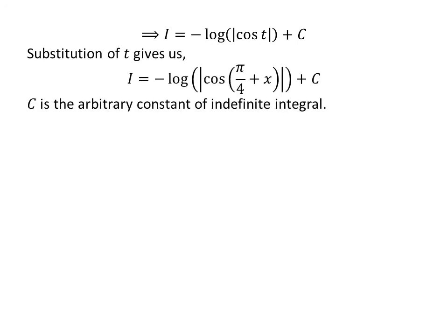Let us substitute t back in terms of x. Since we had assumed t is equal to π/4 + x, so i is equal to -ln|cos(π/4 + x)| + C.